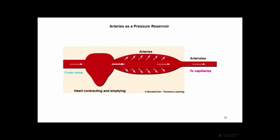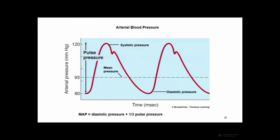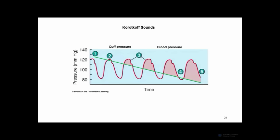Arteries rapidly transport blood from the heart to organs. Because they are very distensible, they store the pressure generated by the ventricles through stretch on their walls, so that when the ventricles are relaxing, arterial recoil provides the perfusion pressure. I also covered blood pressure measurements and how they relate to brachial artery pressure and the Korotkoff sounds.